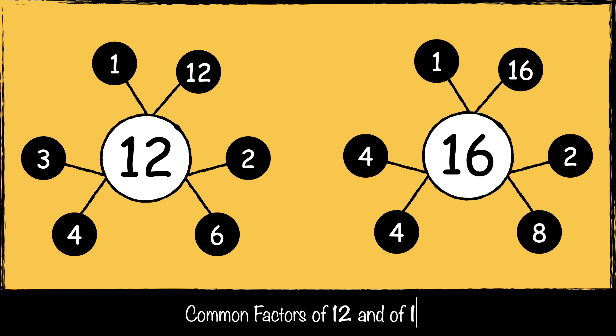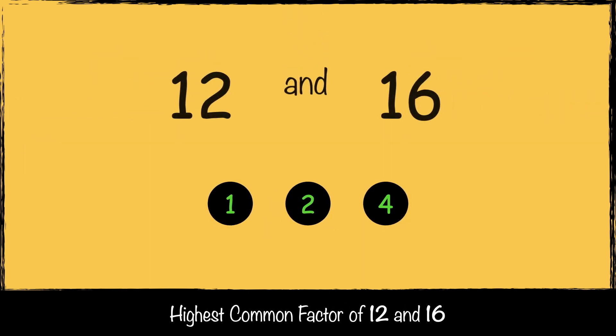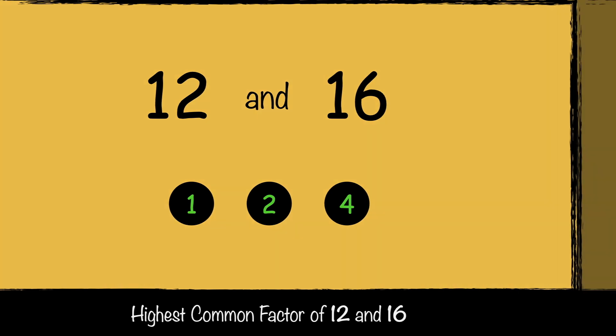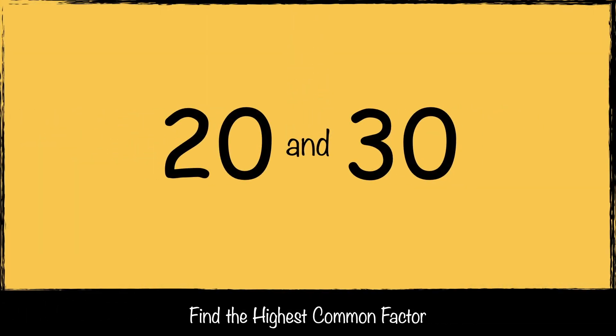Now we can look at the common factors — what factors do both 12 and 16 have? 1, 2, and 4. So the highest common factor of 12 and 16 is 4.